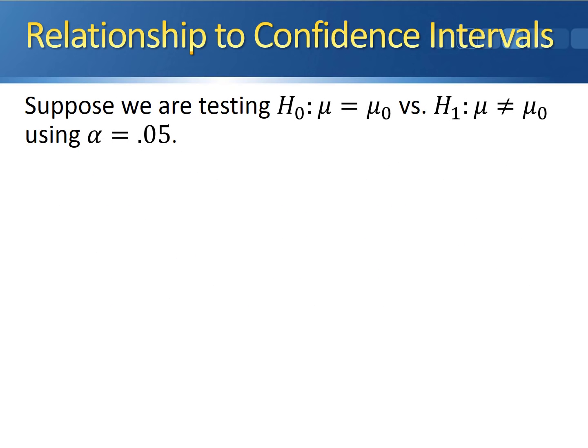Suppose that we're testing the null hypothesis μ = μ₀, our hypothesized mean, versus the alternative hypothesis μ ≠ μ₀, using a 5% level of significance.